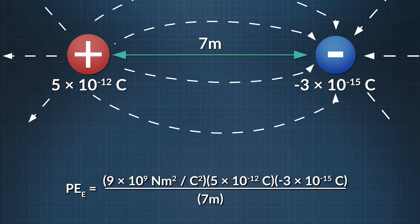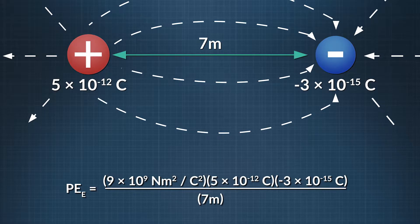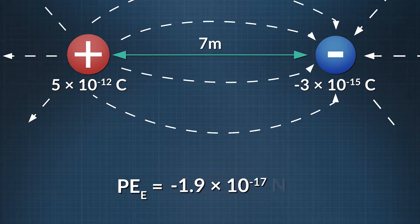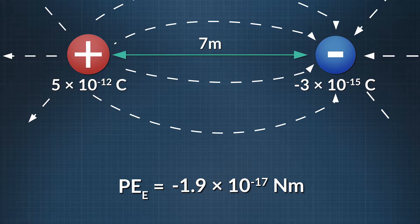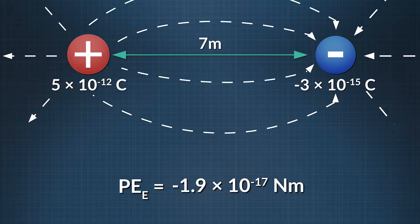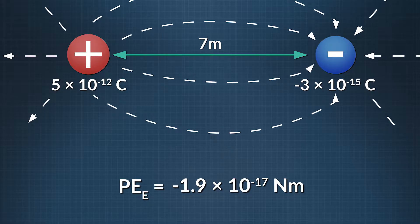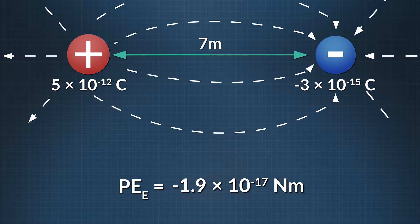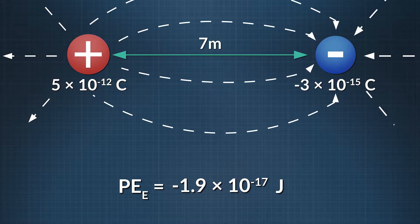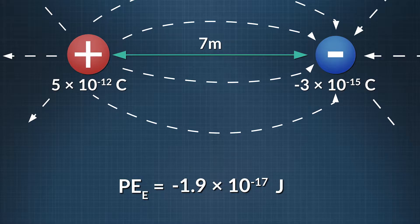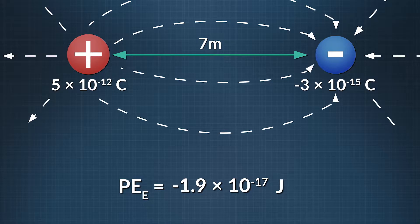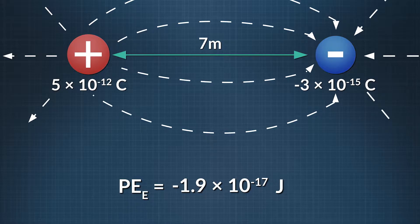Plugging these values into the electric potential energy equation gives us negative 1.9 times 10 to the negative 17 newton meters. Since a newton meter equals 1 joule, our answer is that the electric potential energy of the second point charge equals negative 1.9 times 10 to the negative 17 joules. Notice that the sign of each charge matters, and the answer is a negative number. The negative sign tells us that work must be done on the system to keep these charges apart.